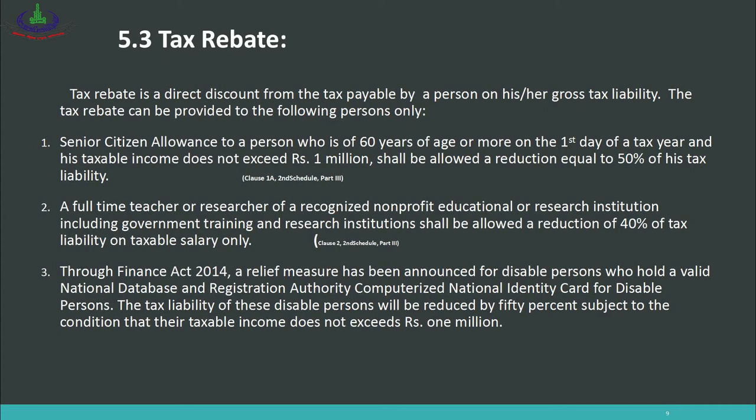Number 3: Through the Finance Act 2014, a relief measure was announced for disabled persons who hold a valid NADRA computerized national identity card for disabled persons. The tax liability of these disabled persons will be reduced by 50%, subject to the condition that their taxable income does not exceed rupees 1 million. So disabled persons with a valid NADRA disabled person's ID card and taxable income not exceeding 10 lakh also get a 50% reduction in tax liability.